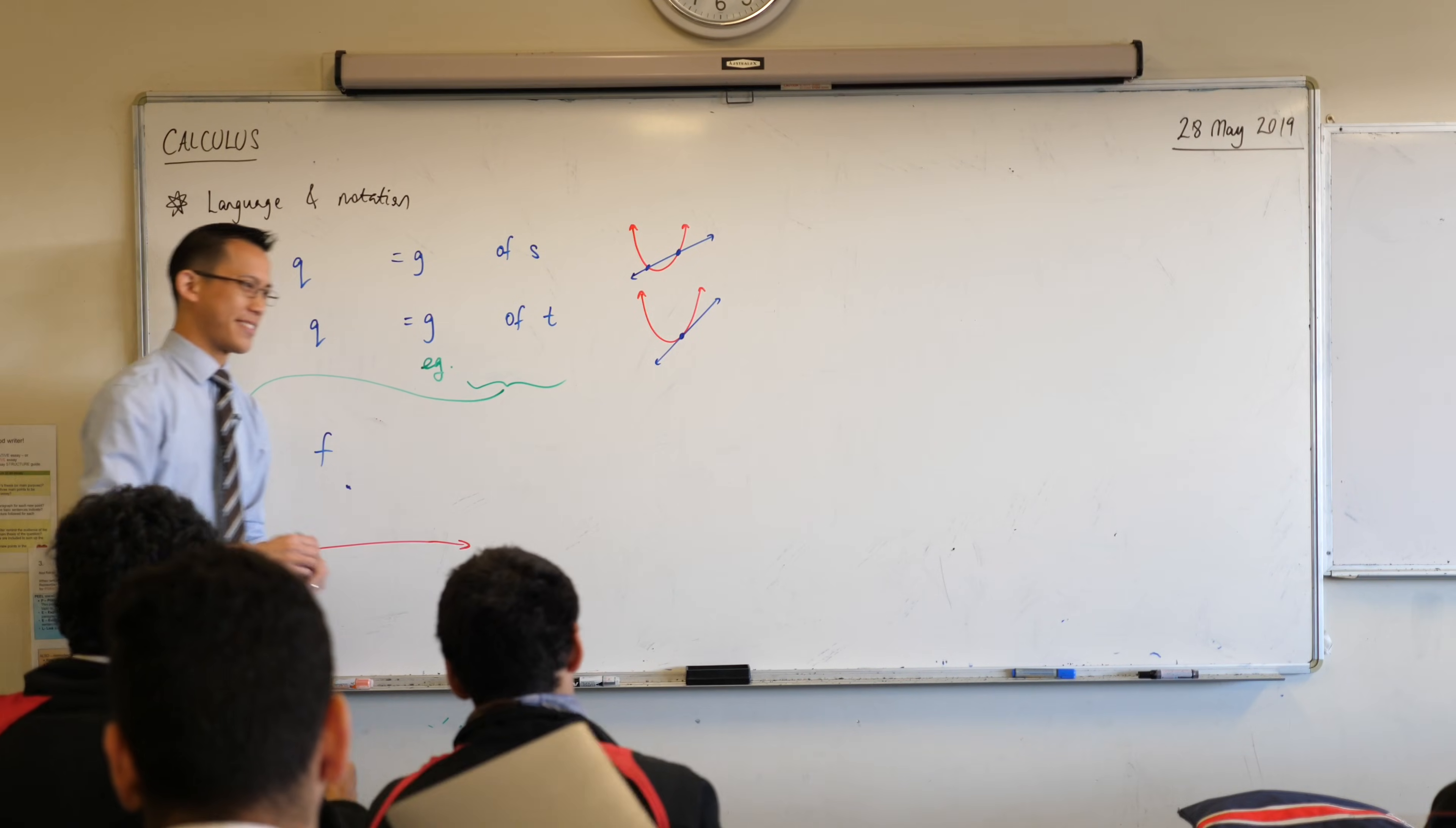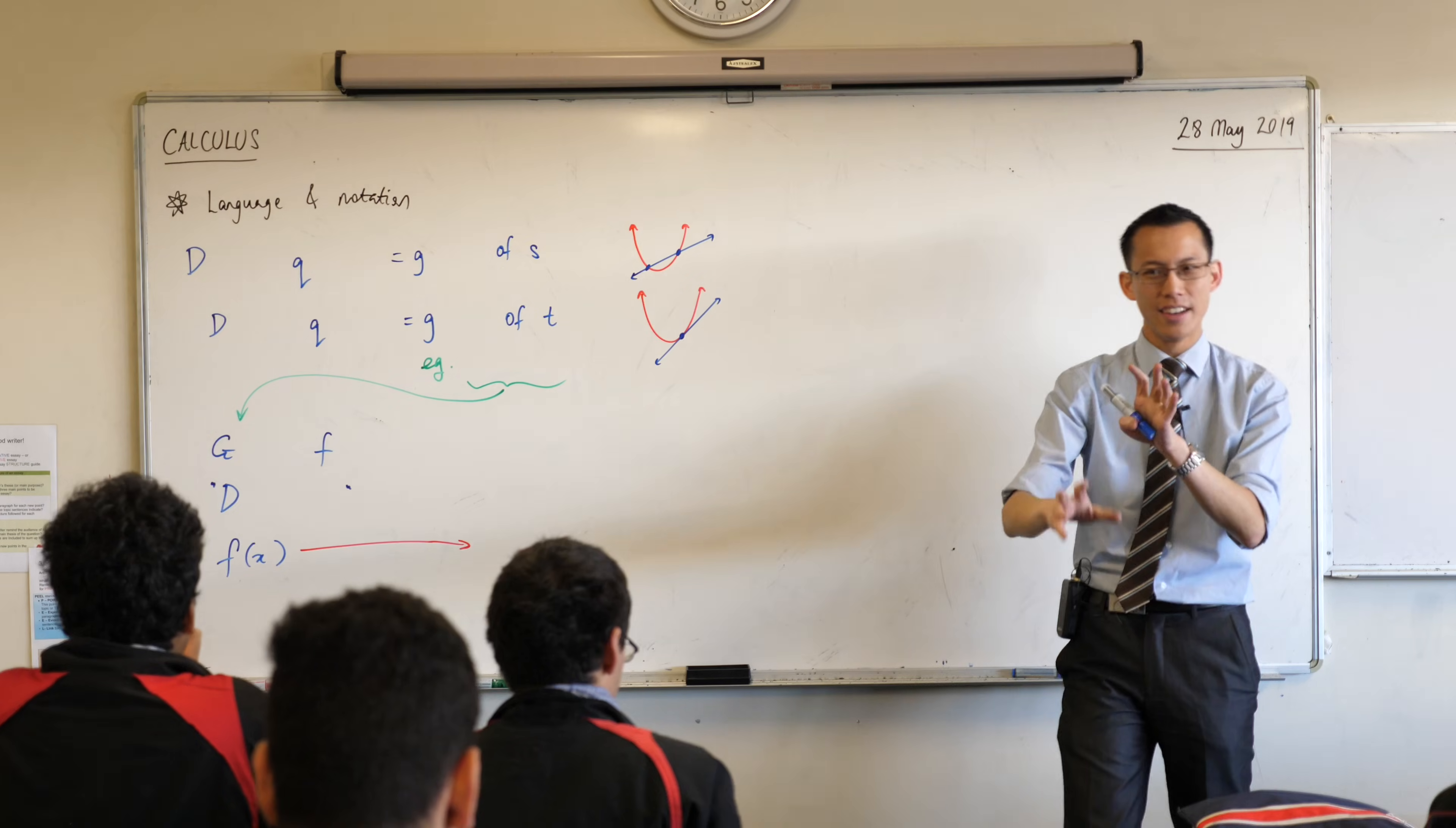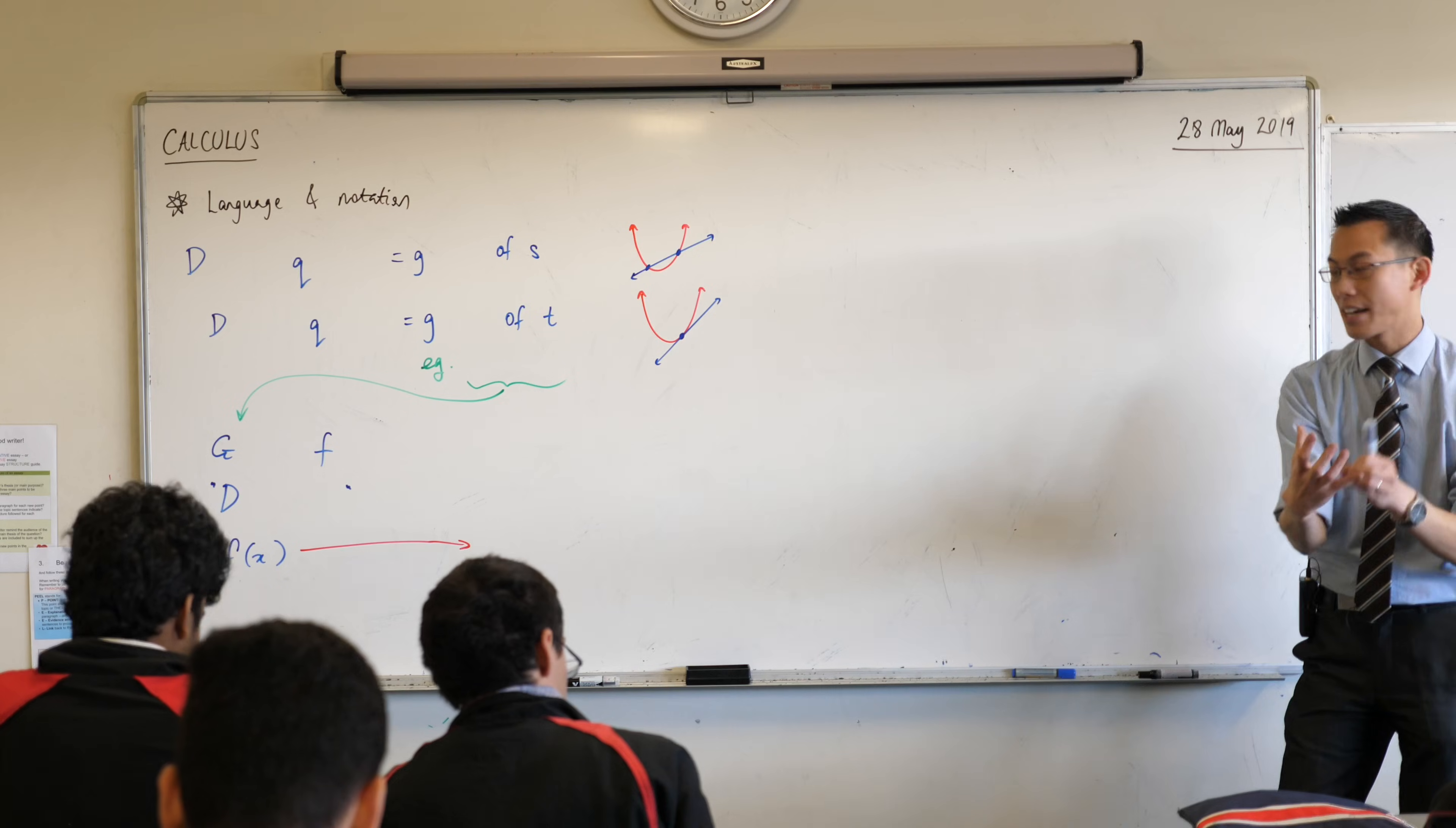But at the moment, what we've been talking about is like, Usain Bolt was running like this, and wait, he did that, and a lot of the things we're describing, it's difficult to talk about because we don't have precise language.